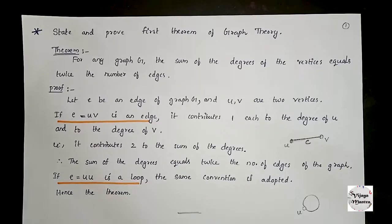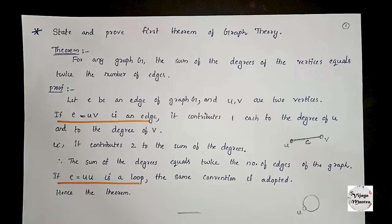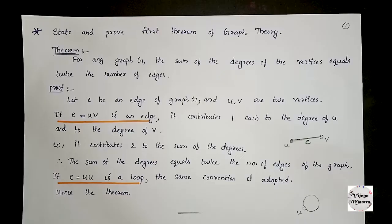Welcome to the new lecture. This is the first theorem of graph theory. The statement is: sigma i equal to 1 to n, d of v_i equal to 2e. The sum of the degrees of vertices equals twice the number of edges.